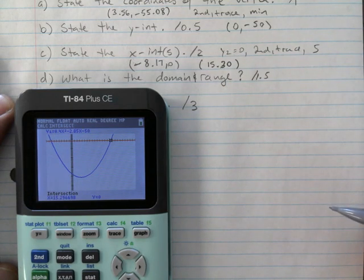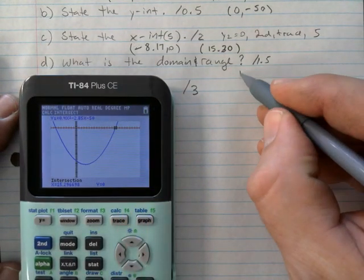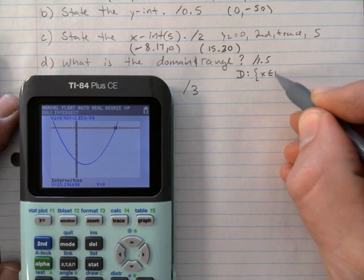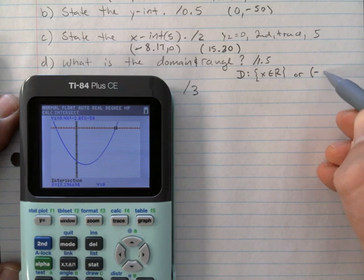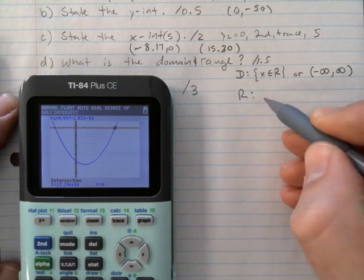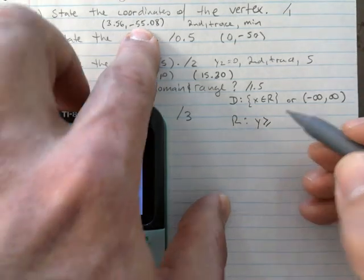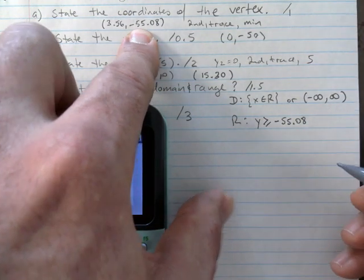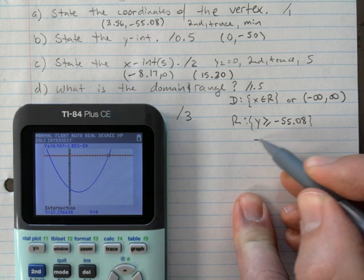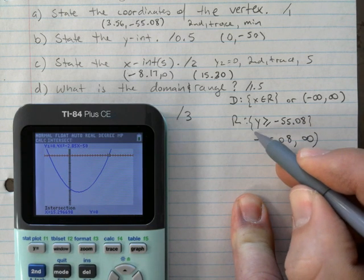What is the domain and range? My domain—so this is how you actually—I don't know if I was—so if you're missing the D, that's fine today. But you could say squiggly brackets, and then it's all reals. Or you could use this notation, which is called the interval notation. That's fine. That'd be half a mark. And this one is a full mark. Why? Because it's pointing up. It's greater than or equal to the y value of the vertex. So I gotta go up here and use that negative 55.08.